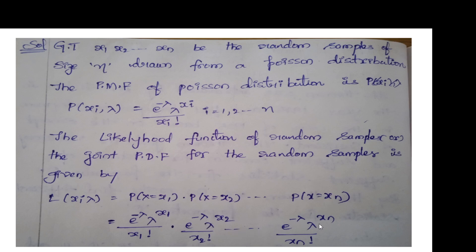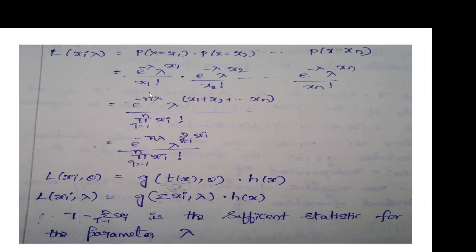We already have the likelihood function from previous classes. Expanding for X1, X2, up to Xn, the likelihood function becomes: e to the power minus n lambda, into lambda to the power of summation Xi, divided by the product of Xi factorial for i equals 1 to n. This is the likelihood function for the Poisson distribution.